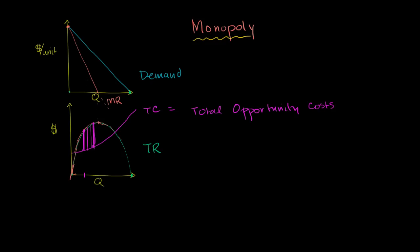We can also visualize profit maximization on this graph by plotting our marginal cost. Just as marginal revenue is the slope of your total revenue curve, marginal cost is the instantaneous slope at any point of your total cost curve. Near zero quantity the slope is close to zero, so marginal cost starts near zero. Then the slope keeps increasing, so marginal cost keeps increasing. So marginal cost looks something like that. If marginal cost is $5 per unit at some quantity, that means the slope of the total cost curve at that same quantity equals 5.